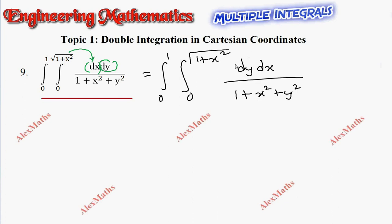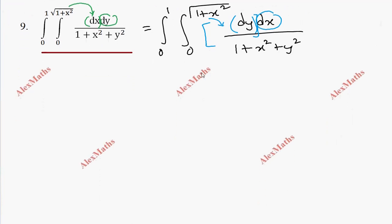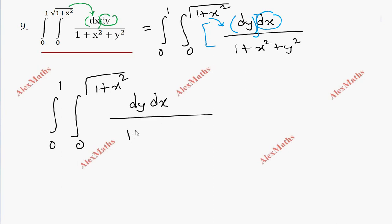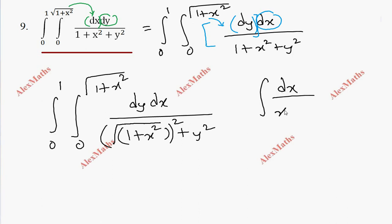Now we can check again. If we integrate with respect to y, then we put the limit, and everything will become in terms of x, because the limit is in terms of x. Then after that, the entire term can be integrated with respect to x at the end. So this is in the correct form. Now for the inner integral, 1 plus x squared is treated as a constant, and we have plus y squared. This is of the form integral dx by x squared plus a squared.